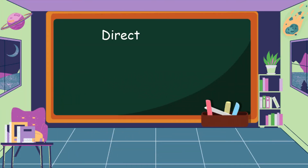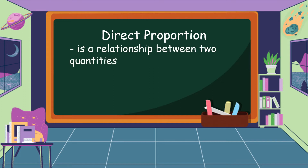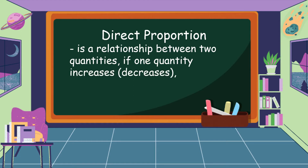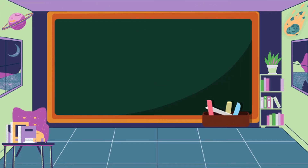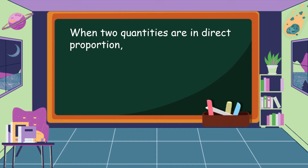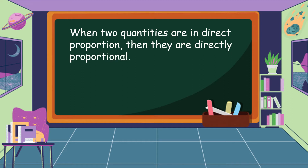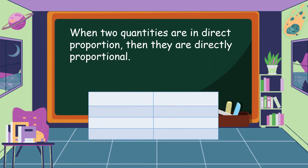What do you mean by direct proportion? Direct proportion is a relationship between two quantities — if one quantity increases or decreases, the other quantity increases or decreases too. When two quantities are in direct proportion, then they are directly proportional. Take a look at this example.